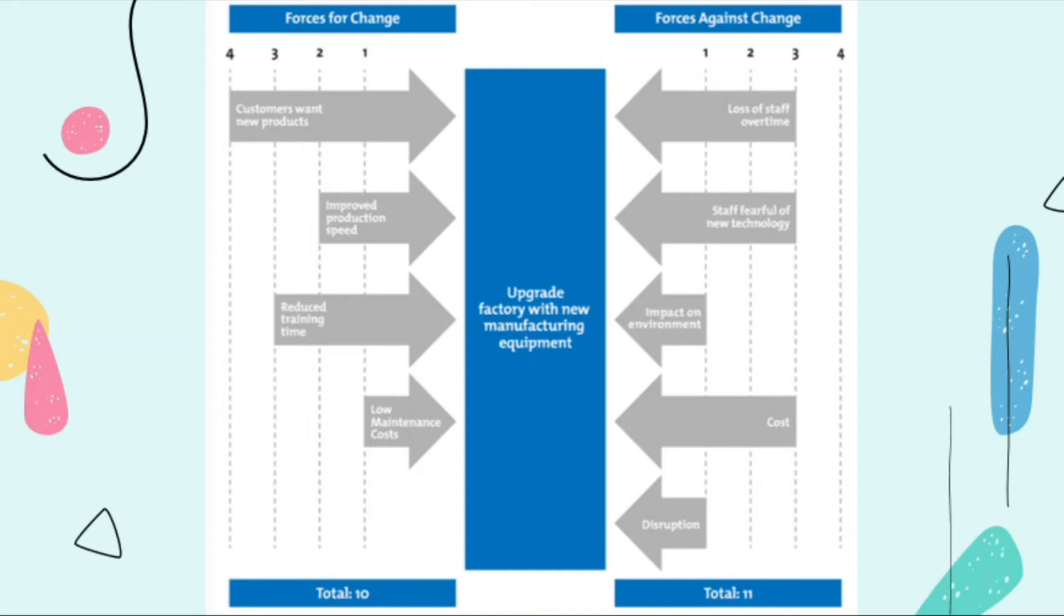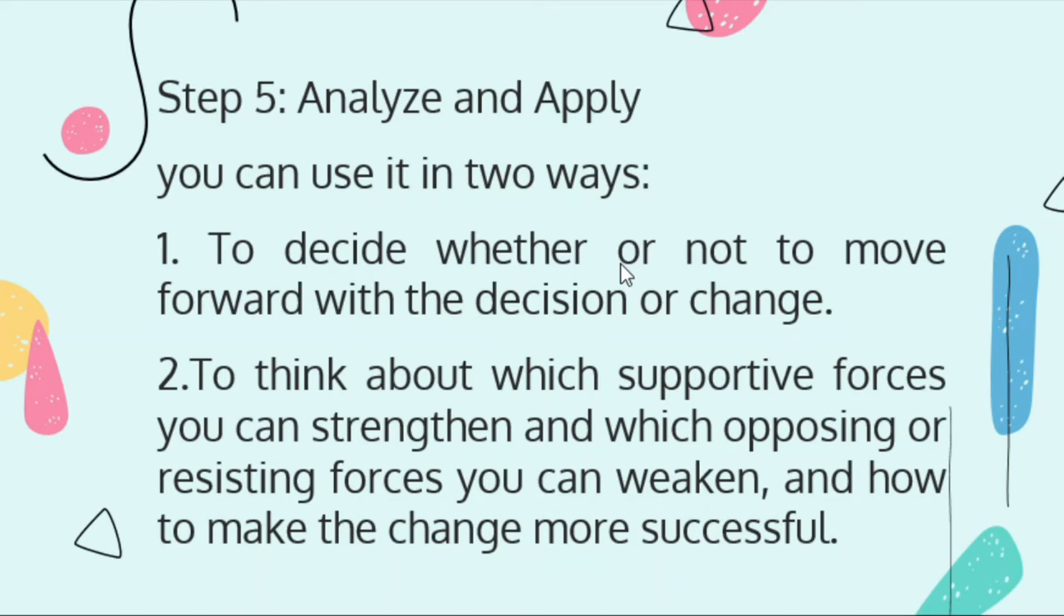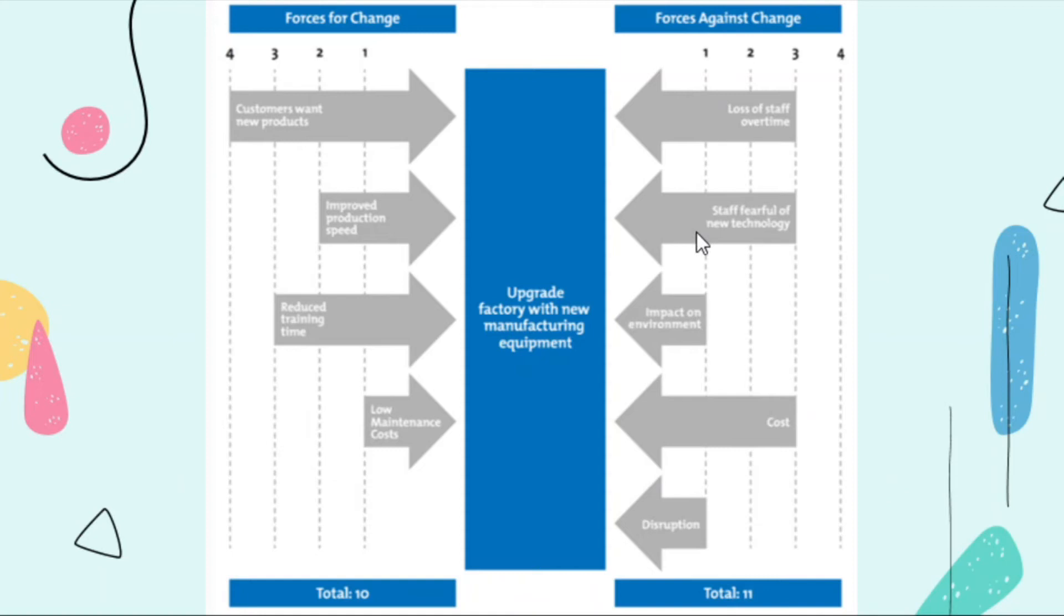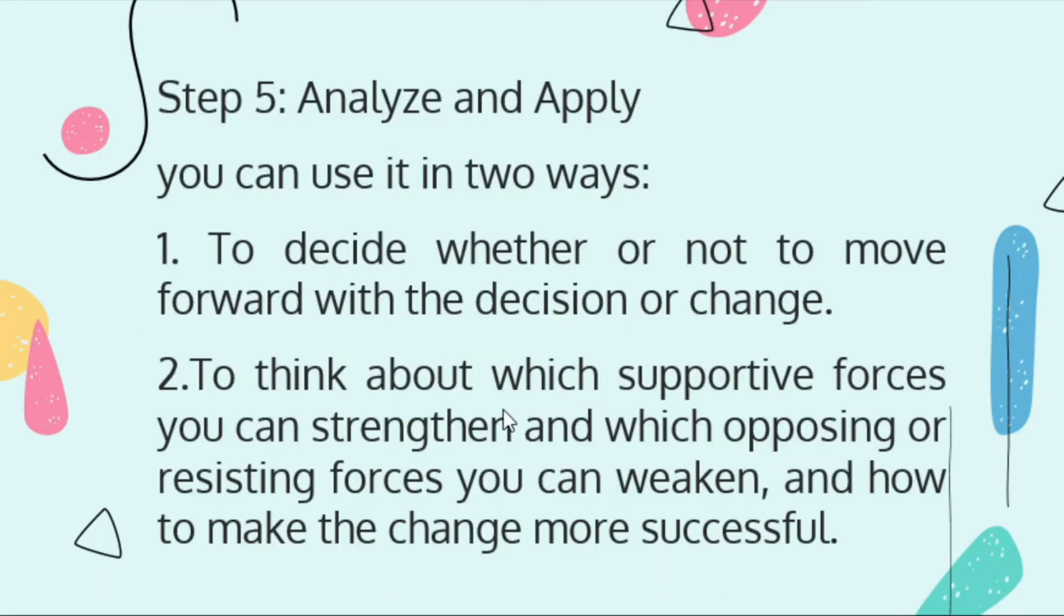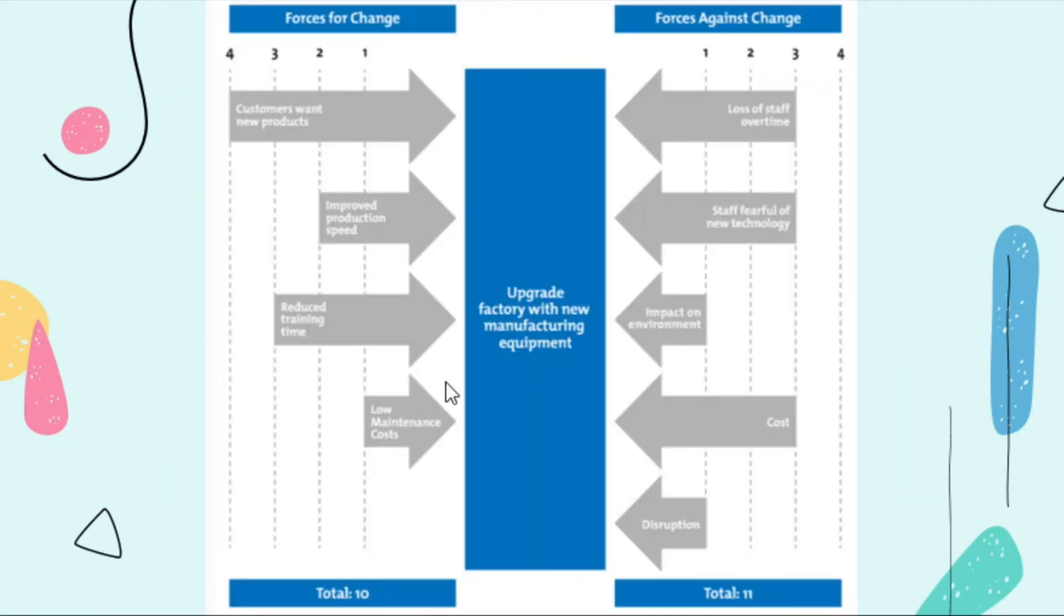So what are you going to do now? Step five, we will analyze. You can use this illustration. First, you will decide whether or not to move forward with the decision. You will decide, because the forces against change are heavier, do we not do it? Or do we still do it? If you still want to do that, what you will do is think about which supportive forces you can strengthen and which opposing or resisting forces you can weaken, and how to make the change more successful.